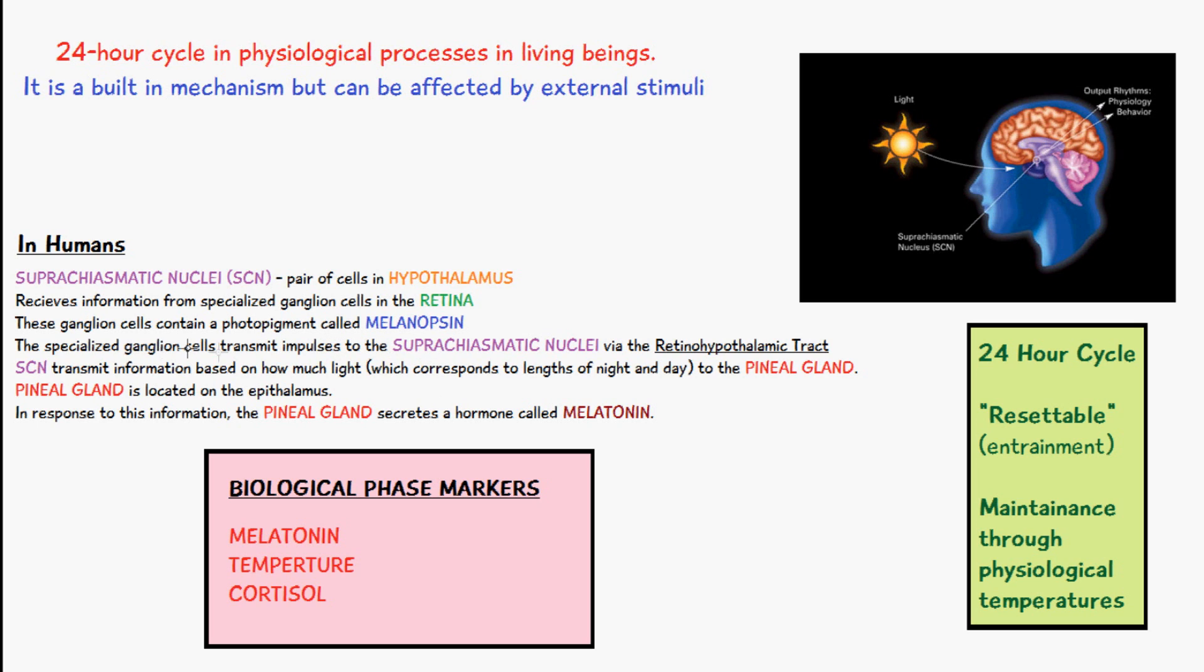The effect of melanopsin is to create a signal, and these signals are transmitted from the specialized ganglion cells to the suprachiasmatic nuclei via the retinal hypothalamic tract.